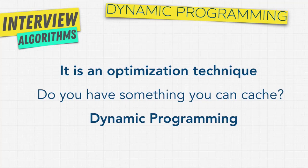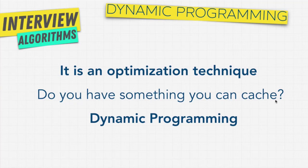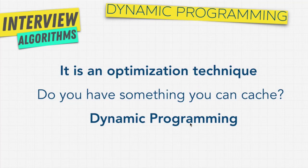Here's the fun fact: dynamic programming actually means nothing — it's a completely garbage buzzword. I'll link to a funny article on how the name came to be. At the end of the day it's just an optimization technique using something called caching. If you have something that you can cache, then you can use dynamic programming. At a high level, dynamic programming is a way to solve problems by breaking it down into a collection of subproblems, solving each of those subproblems just once, and storing their solutions in case the same subproblem occurs again.